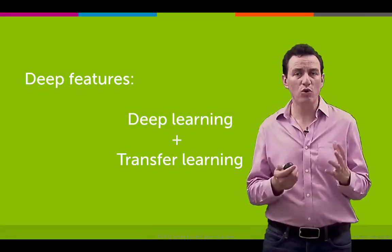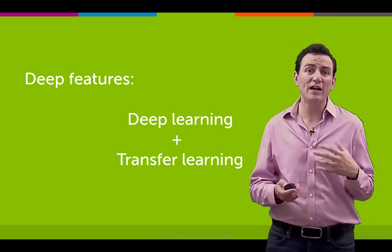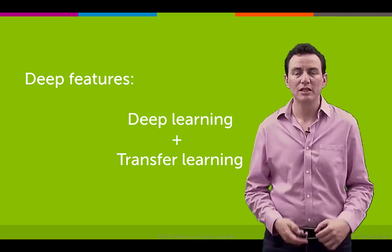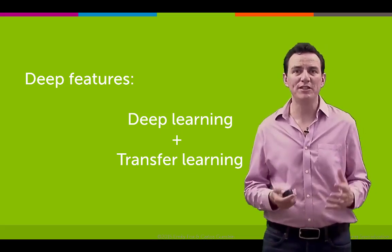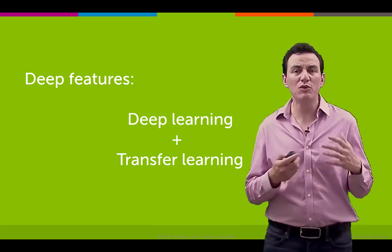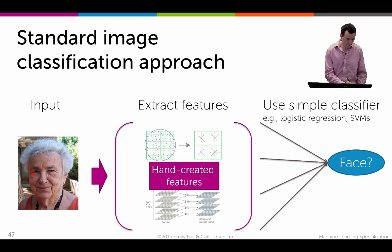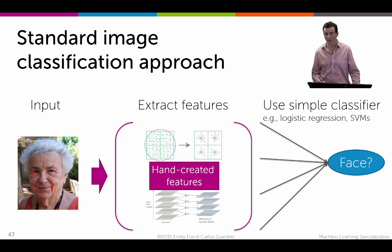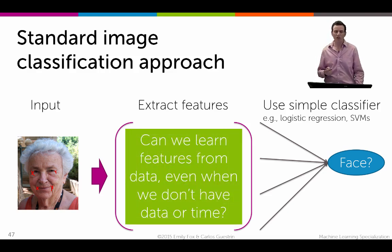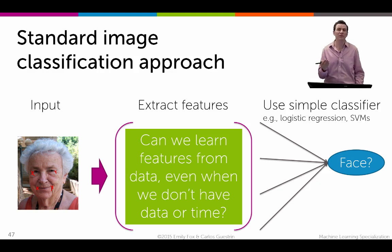Deep neural networks are really cool, high-accuracy tools, but they can be really hard to build and require lots and lots of data. Next we're going to talk about something really exciting called deep features, which allow you to build neural networks even when you don't have a lot of data. Going back to our standard image classification pipeline — starting with an image, detecting SIFT features or other representations, and feeding that to a simple classifier — the question is: can we somehow use the features learned through the neural network, those cool ones that detect corners, edges, and even faces, to feed that classifier?